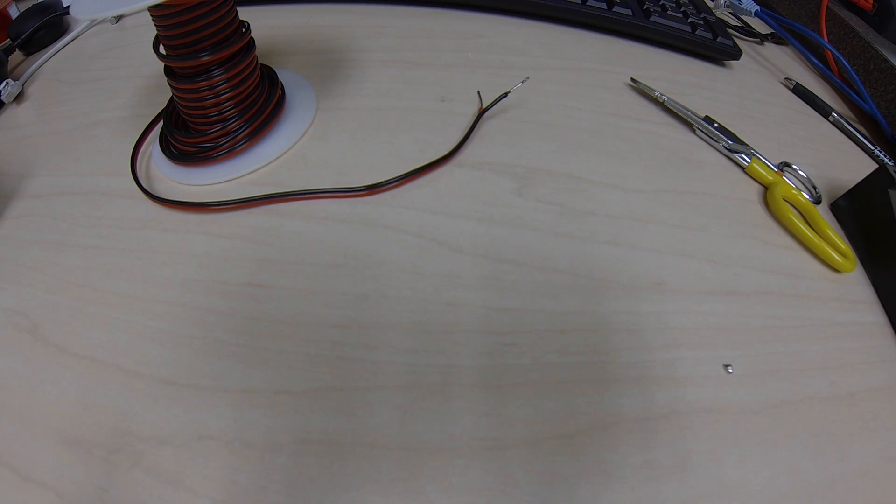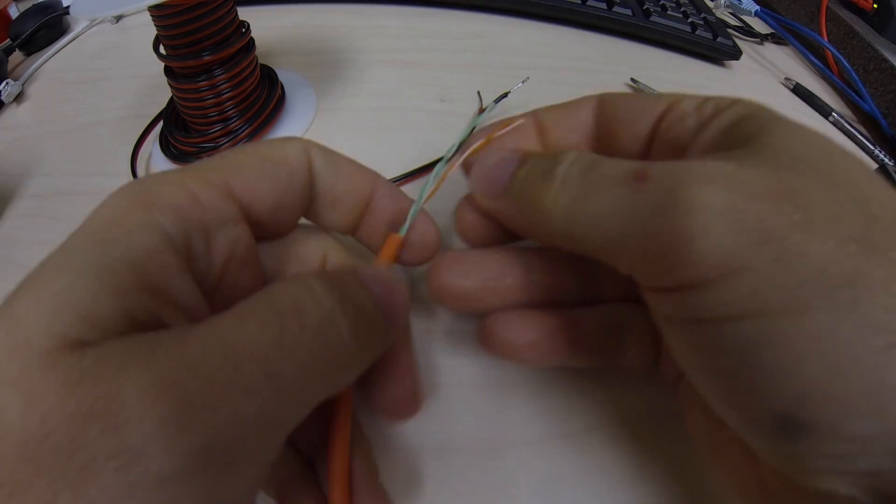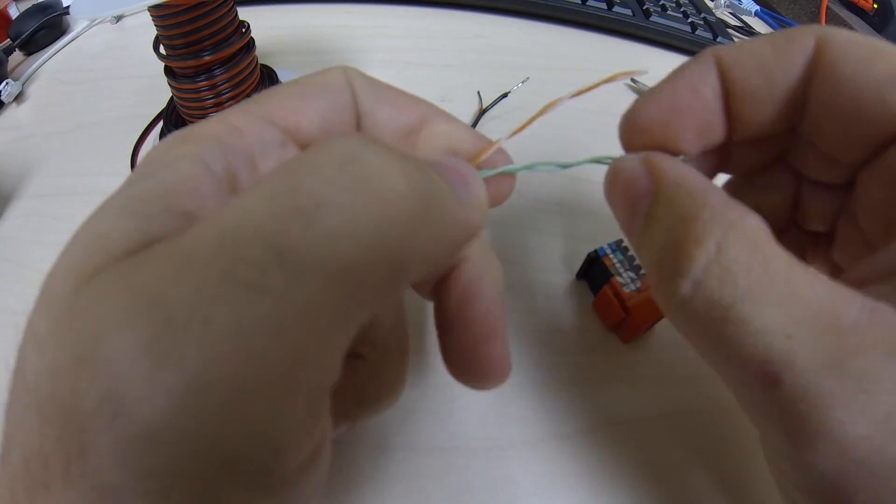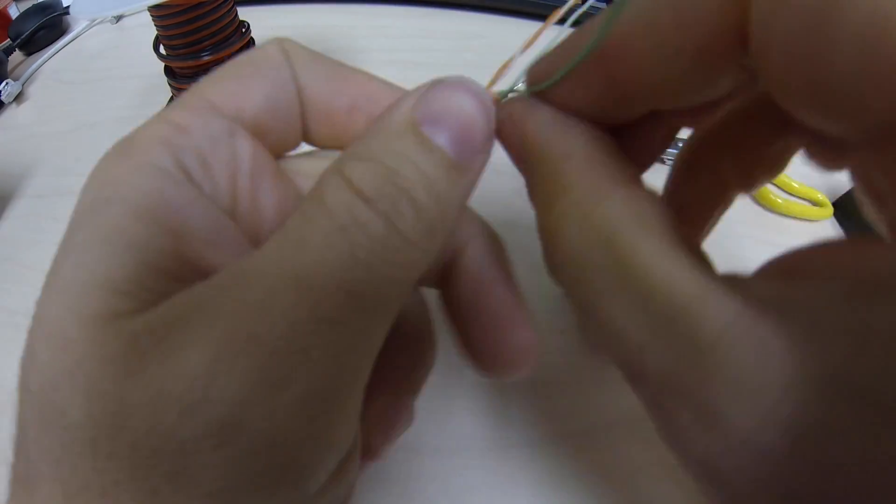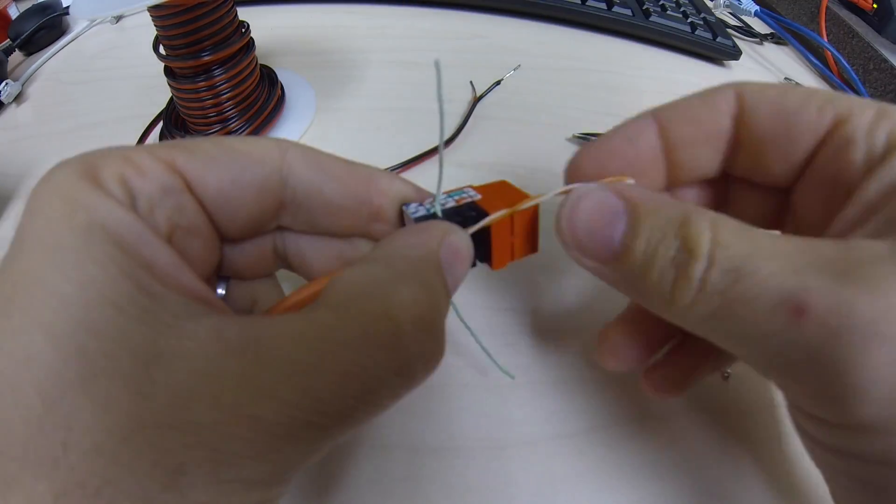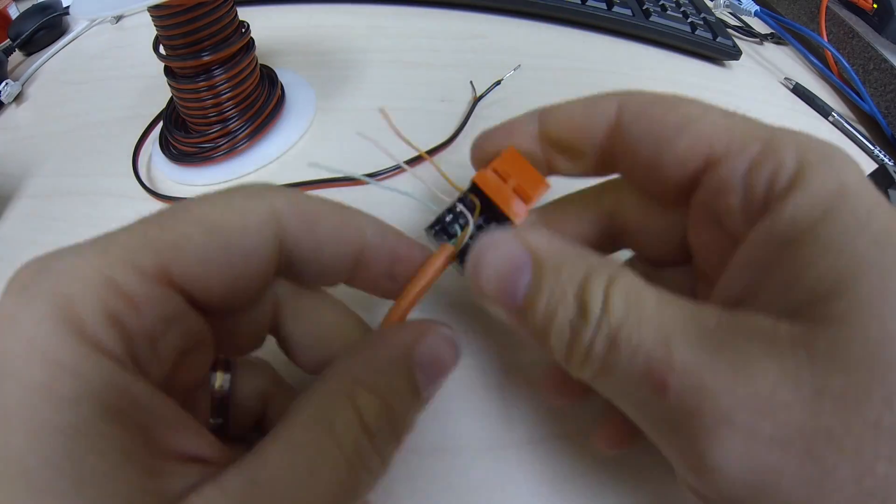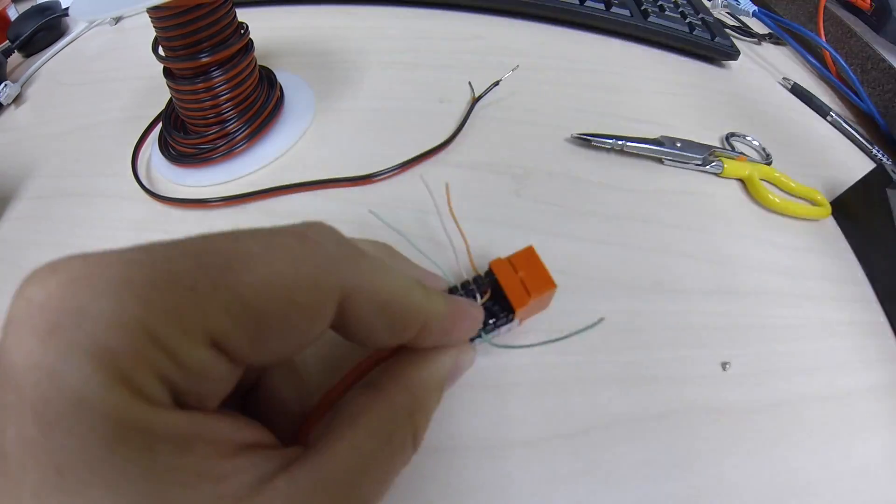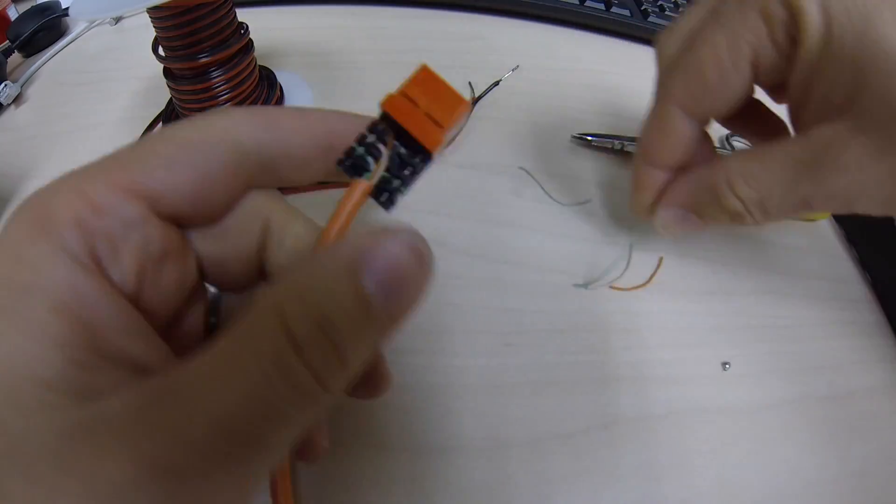Now we're going to use a jack and a mod plug on this one. I've already done the mod plug end so there's only the four data lines here that you need - the green pair and the orange pair. Those are the data set and I'm just punching those down into the jack.